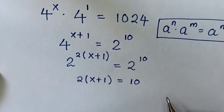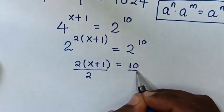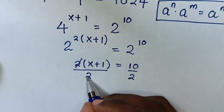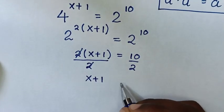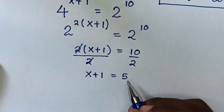Then in the next step, we will divide by 2 on both sides. So this and this will cancel. Then it will be x plus 1 is equal to 10 divided by 2, which is 5.